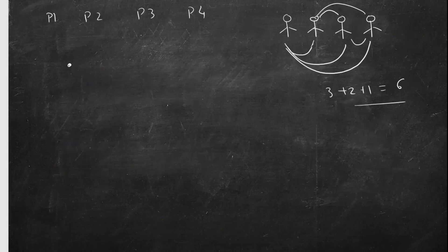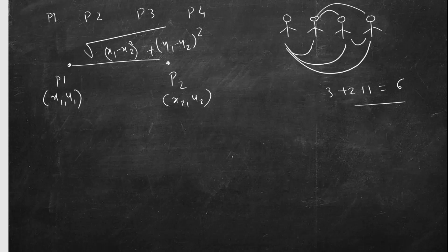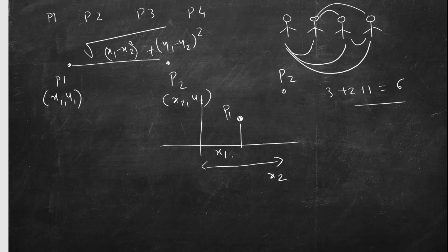We will calculate the length of all six segments. The length of two points in 2D space — p1 with coordinates (x1, y1) and p2 with coordinates (x2, y2) — is the square root of (x1 - x2)² + (y1 - y2)². This comes from the Pythagorean theorem: the horizontal distance is x2 - x1, the vertical distance is y2 - y1, so we take the squares of these two and take the square root.